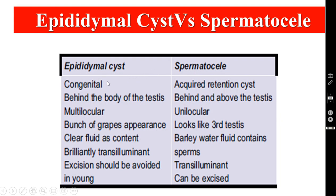What is the differentiating point between epididymal cyst and spermatocele? Epididymal cyst is a congenital degeneration cyst, whereas spermatocele is an acquired retention cyst. Epididymal cysts are usually behind the body of the testis, whereas spermatocele is behind and above the testis. Epididymal cysts are usually multilocular; spermatocele is unilocular. Epididymal cysts look like a bunch of grapes, whereas spermatocele looks like a third testis. Epididymal cysts contain clear fluid, whereas spermatocele contains barley water-like fluid with sperms. Epididymal cysts are brilliantly transilluminant, whereas spermatocele is not transilluminant. Epididymal cyst excision should be avoided in young patients, whereas spermatocele can be excised.